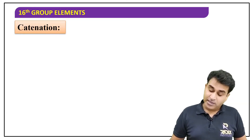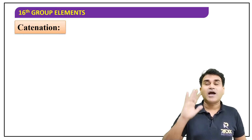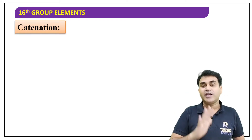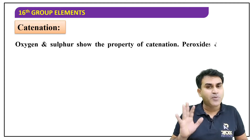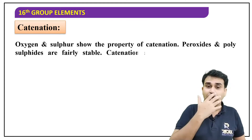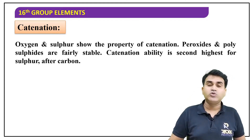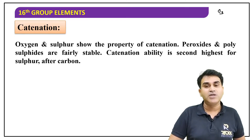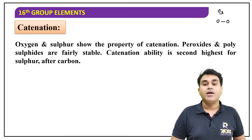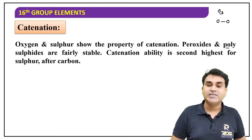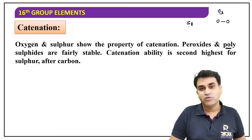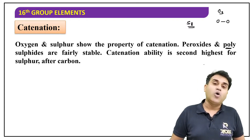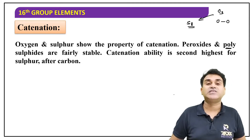Catenation property — self-combining capacity. After carbon, sulfur has very high catenation property. Sulfur can combine with itself extensively. Oxygen's catenation property is very low, though to some extent oxygen atoms can combine — like O₃ can form, or in peroxide compounds two oxygen atoms combine. But polysulfides are very common, where multiple sulfur atoms join together — like in S₈, eight sulfur atoms are joined. So sulfur's catenation property is more than oxygen's.